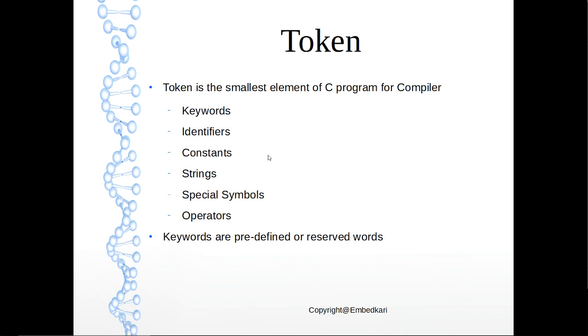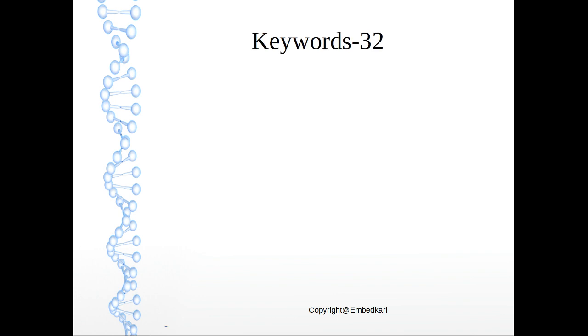Tokens can be keywords, identifiers, constants, strings, special symbols, or operators. We will see one by one all these things. Keywords are predefined or reserved words. Let's see what are the keywords. There are 32 keywords in C, and additional after C99, that is a different thing. First, primitive data types and related keywords. What are the primitive data types? For example, integer, long, double, float, short, character, unsigned, signed. So don't worry about all these things.